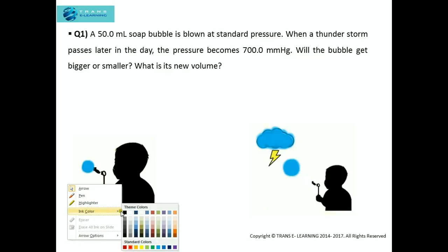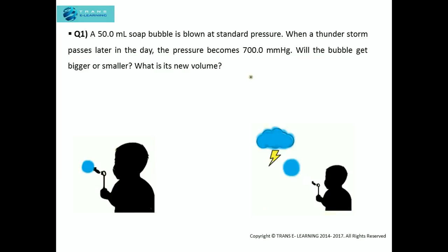Here is the first question. First of all we need to read the question properly. A 50 mL soap bubble is blown at standard pressure. Here you can see in the first figure the volume of the bubble is 50 mL and it was blown at standard pressure. So at standard pressure the value will be 1 atm.